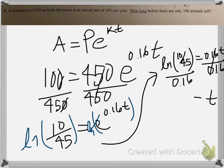So you get T equals. Let me see what that is. Alright, so I got negative 1.5. I don't know why the answer is negative. I think I forgot to put a negative at the beginning. Because it's decay, making this a positive. So it'll be in 1.5 years. How long before there are only 100 animals left. 1.5 years at a 16% rate.